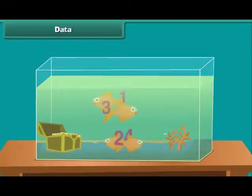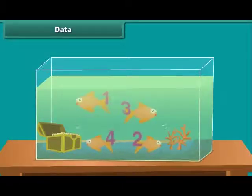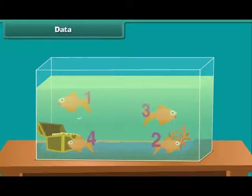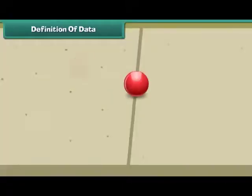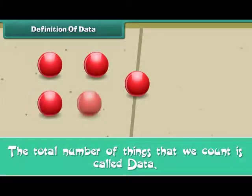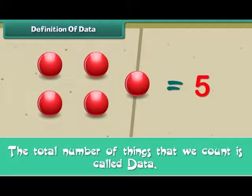Hence, the data is 4. Number of orange fishes is 4. Friends, we now know that the total number of things that we count is called the data.